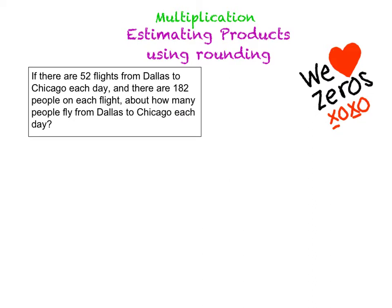Alright, let's go ahead and get started. Our problem states: if there are 52 flights from Dallas to Chicago each day, and there are 182 people on each flight, about how many people fly from Dallas to Chicago each day?